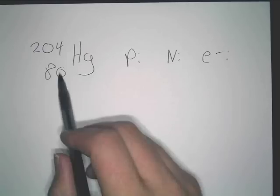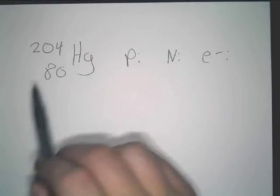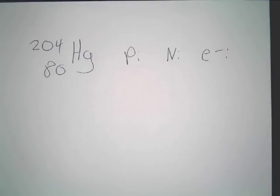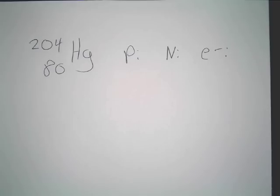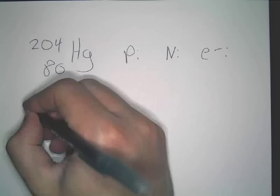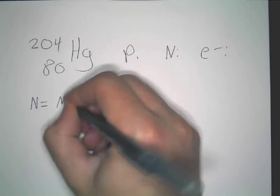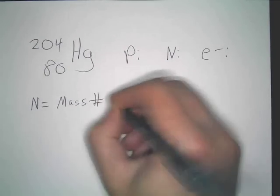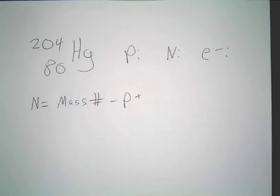Atomic number is the bottom one. It's the number of protons, or it's on the periodic table. Remember that your neutrons are equal to the mass number minus the number of protons. Don't forget that.